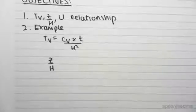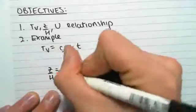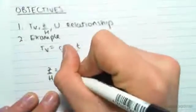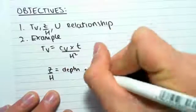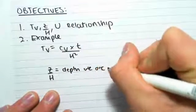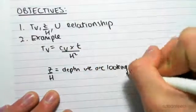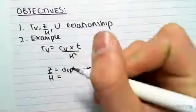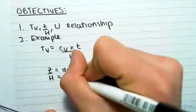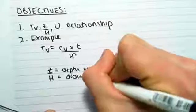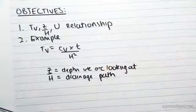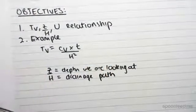We're going to first define all these things. Z on H: Z is the depth we're concerned about, the depth we are looking at, and H is the drainage path. This is obviously dimensionless because you're dividing meters by meters to get just a number.